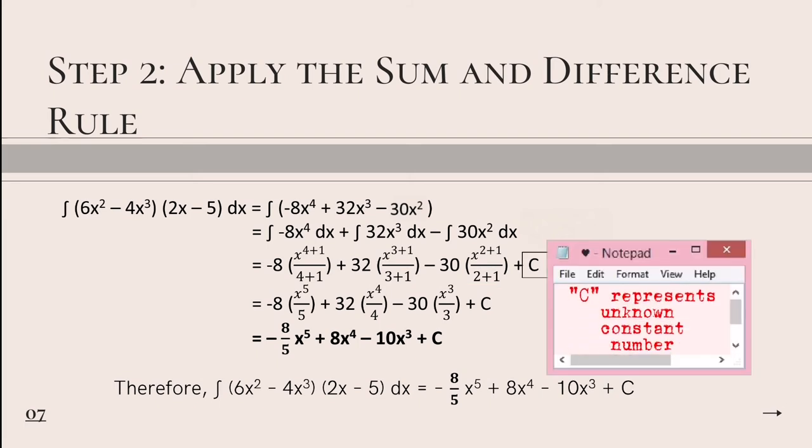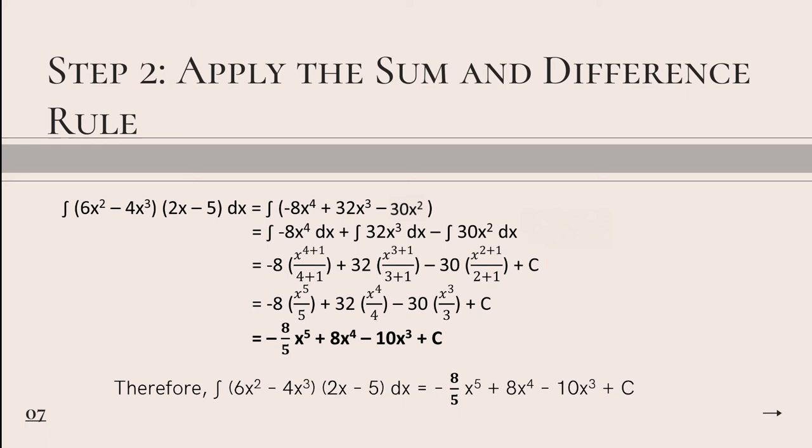Remember that c there represents our unknown constant number. Next is we are going to perform the operation. For that, we will get negative 8x raised to the power of 5 all over 5 plus 32x raised to the power of 4 all over 4 minus 30x cubed all over 3 plus c. We can notice that 32x raised to the power of 4 all over 4 can be simplified by dividing.